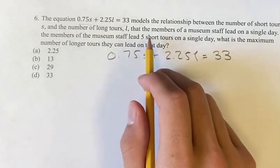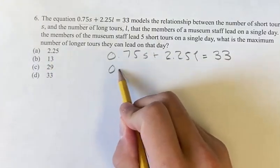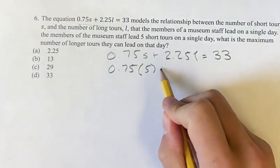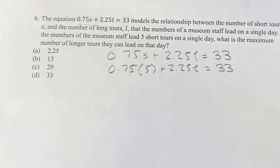So what we're going to do here is we're going to plug in five short tours for the variable that represents those short tours, which is s. So 0.75 times 5 plus 2.25l is equal to 33.